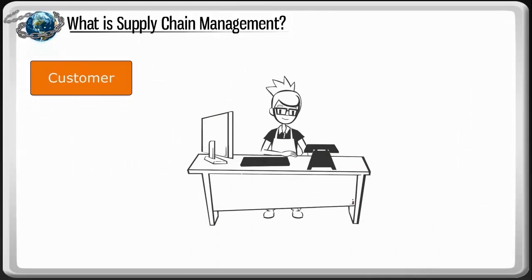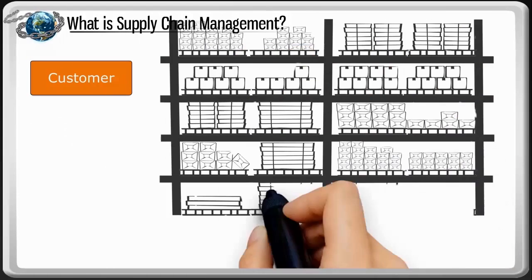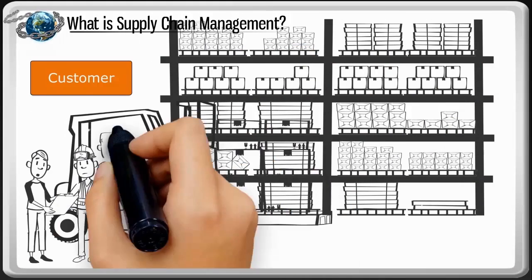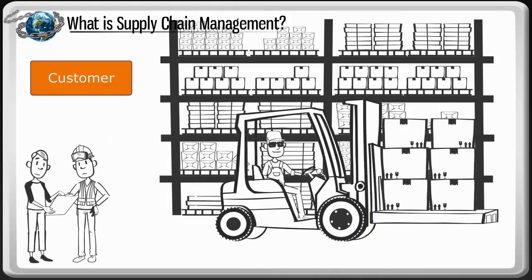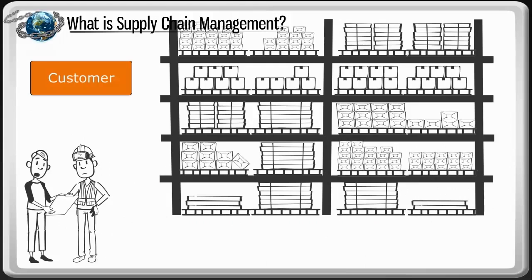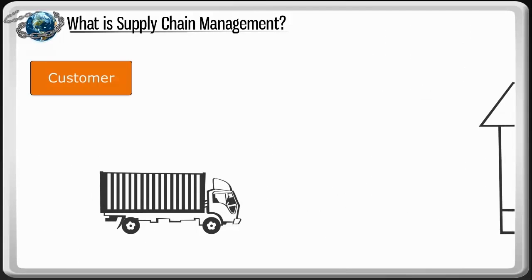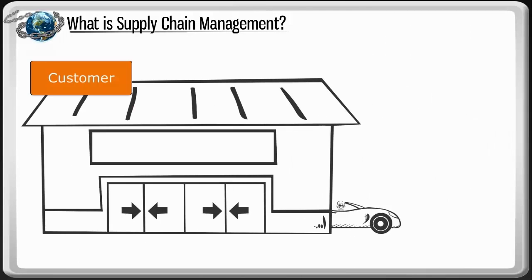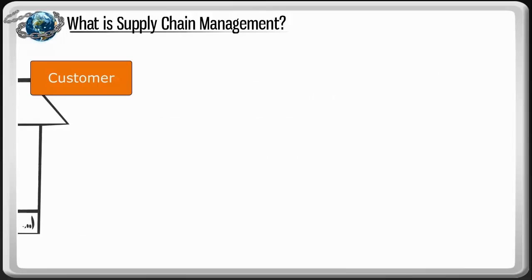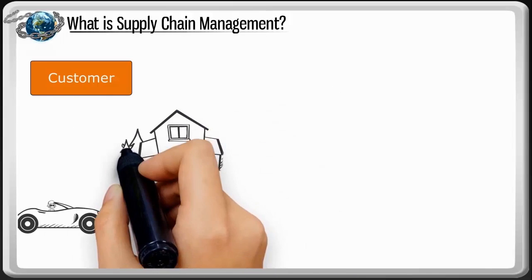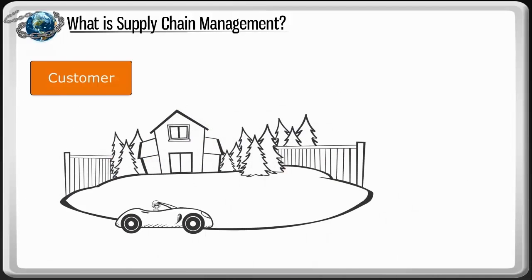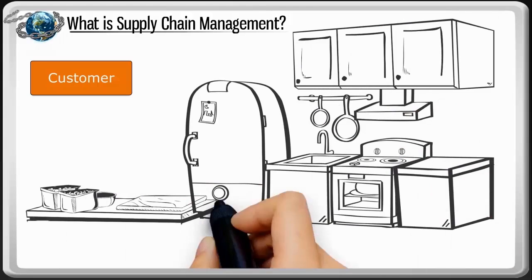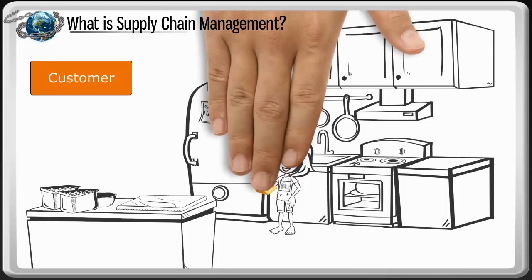Once a customer places an order, the warehouse employees locate the correct variety and place it on another truck that delivers the cheese to the customer. The cheese is now in your refrigerator and ready for your next snack. Getting the cheese to your refrigerator can be a complicated process, which is why effective and productive supply chain management is so important.